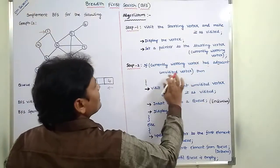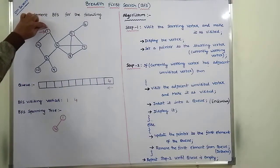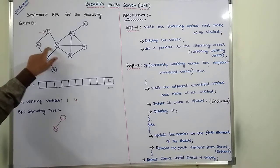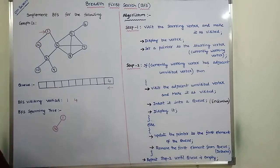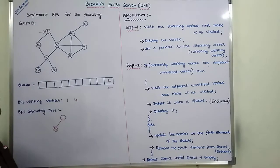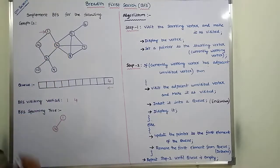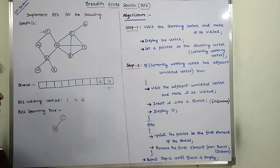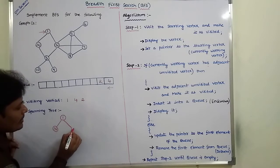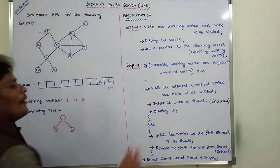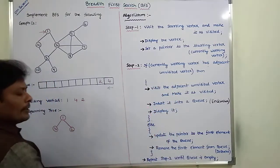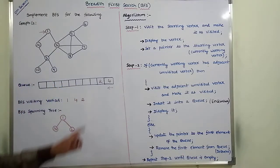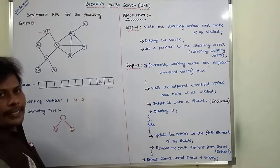Q is not empty — it contains vertex 4 — so go to step 2. Vertex 1 has two adjacent vertices, 4 and 2; 4 is already visited but 2 is not. So vertex 1 has unvisited vertex 2, condition is true, and these three statements are executed again. Visit vertex 2 and make it as visited, insert into the queue, and display vertex 2.